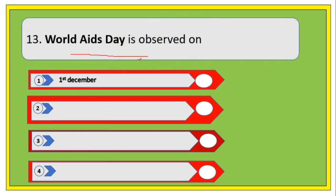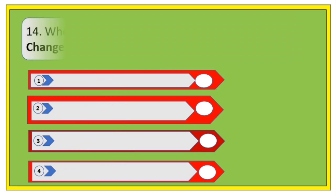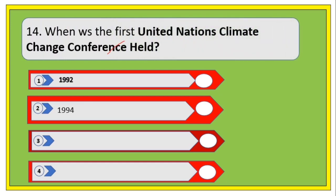World AIDS Day — options are 1st December, 1st September, 1st November, and 1st January. The right answer is 1st December.